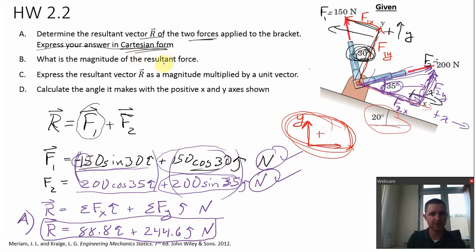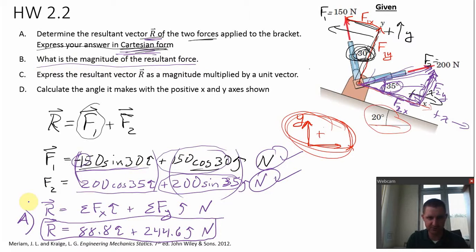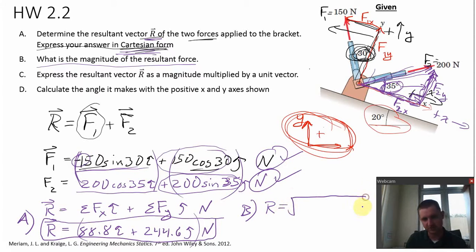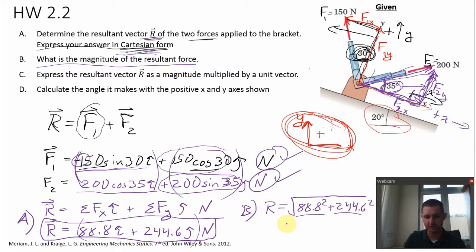Now part B asks to simply find the magnitude of the resultant force. We already have the resultant force in component form, so to find the magnitude take the square root of each component squared and added together: the square root of 88.8 squared plus 244.6 squared. We get a magnitude of 260.2 Newtons. That's the answer to part B.